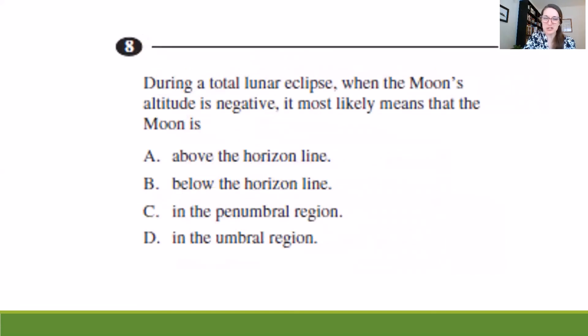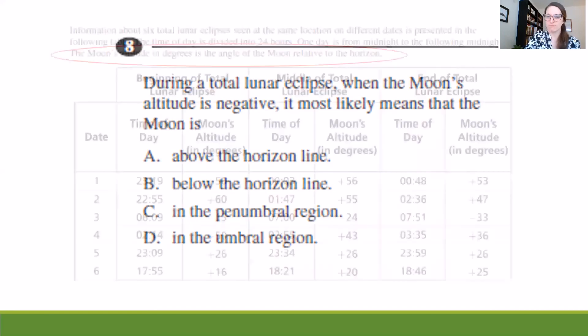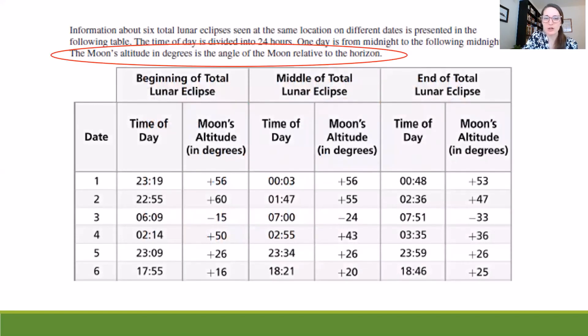For our last question, it says, during a total lunar eclipse, when the moon's altitude is negative, it most likely means that the moon is above the horizon, below the horizon, in the penumbral region, or in the umbral region. So let's take a look. This is talking about the altitude being negative. And the altitude, I remember, was on the table portion. So if we go back and look at the table, I see at the top there that the moon's altitude in degrees is the angle of the moon relative to the horizon. Now, if I go down and look below, there are three different columns that show me the moon's altitude in degrees for the beginning, middle, and end. And I see that sometimes it's a positive number and sometimes it's a negative number.